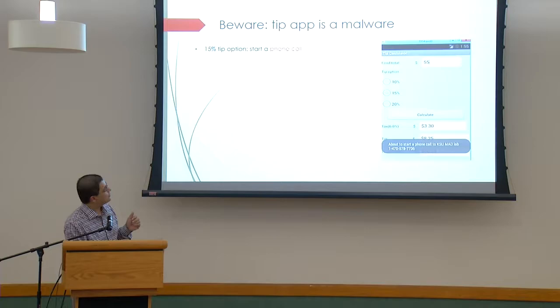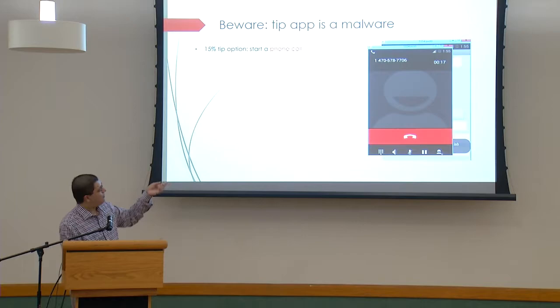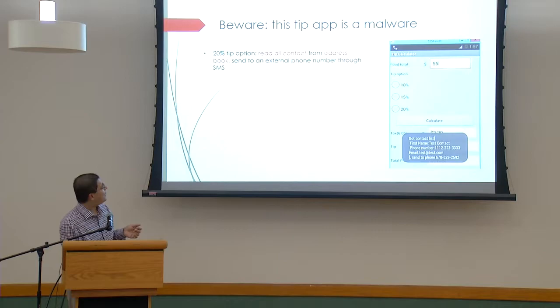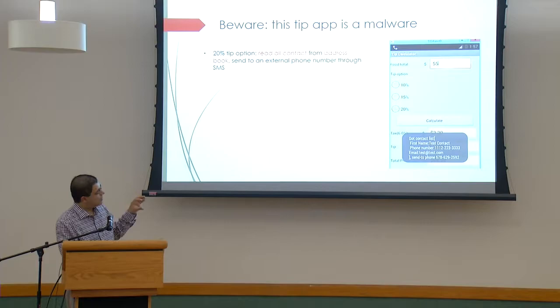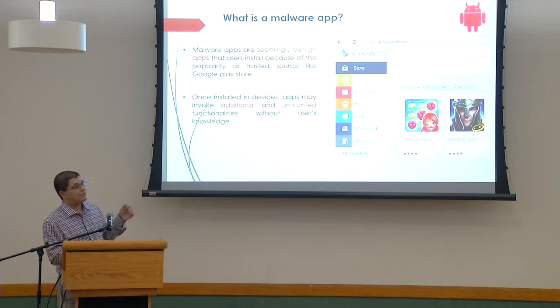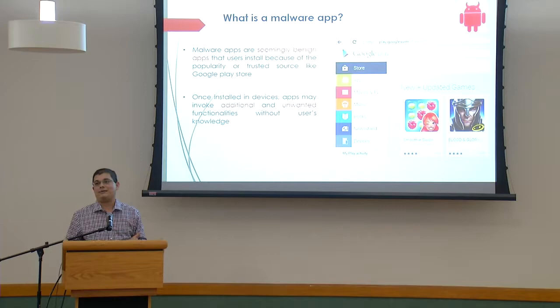Continuing the demo: if the user chooses 15% tip, suddenly a phone number is dialed — which looks bizarre. And if 20% is chosen, the result appears, but additionally, the list of people's names, phone numbers, and emails from the contact list are displayed. This is additional behavior done by this malware. So a malware looks like a seemingly useful application, but when you use it, it is also doing unintended additional activities.